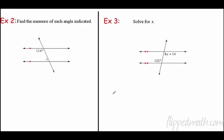Let's try another one. Find the measure of each angle indicated. So I want to find this. What kind of relationship do I have here? That same side interior. So 114 plus question mark equals 180. Subtract 114 over the other side and I should get 66. So that would be 66 degrees.